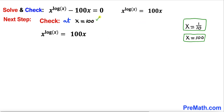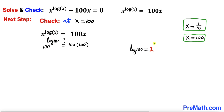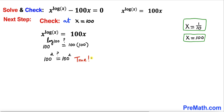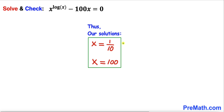Now let's check x equals 100 by replacing x with 100. Log(100) equals 2 as established earlier, and replacing log(100) with 2 shows the left hand side equals the right hand side — a true statement. Therefore x equals 100 is also a valid solution. Our two solutions are x equals 1 over 10 and x equals 100. Thanks for watching and please don't forget to subscribe to my channel for more exciting videos.